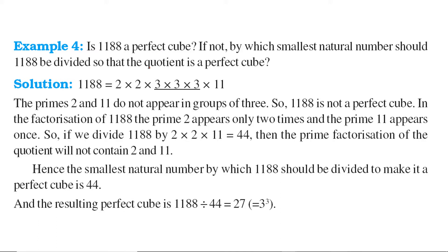Is 1188 a perfect cube? Let us find it out. 2 into 2, 3 into 3 into 3 into 11. Now 3 into 3 into 3 is giving you a perfect cube but 2 into 2, we are lacking a 2. We are lacking 11 into 11 here.